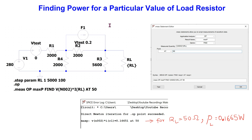In addition to the maximum power transferred, the measure directive can also be used to find the power for a particular value of the load resistance. To do this, we use the find command and specify the desired value of RL. This generates a measure directive which can be placed on the schematic. When we run the simulation, the measure directive reports that for RL equal to 50 ohm, the power dissipated is 0.16 watts, which is less than the maximum power transfer as expected.